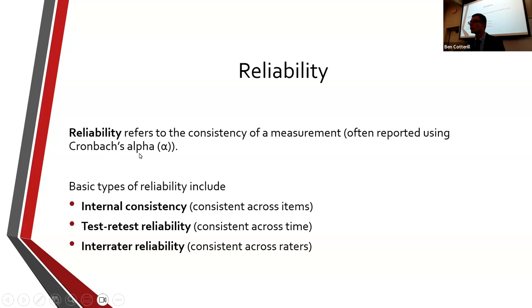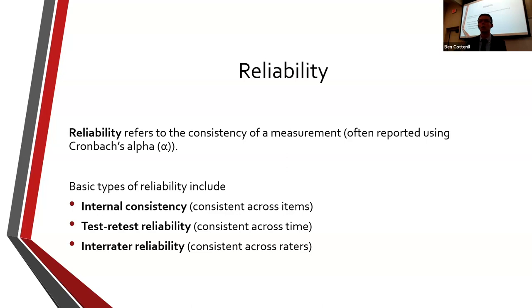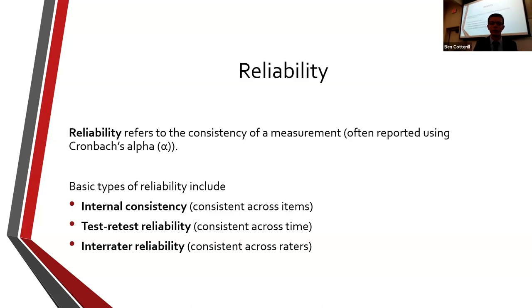Cronbach's alpha is the average correlation across items. If I have, say, eight questions measuring shyness, I want good correlation between all of them. It's going to be a number between negative one and plus one — the closer to zero, the weaker the relationship; the closer to plus one, the stronger the positive correlation. What I want here is a high positive correlation, telling me there's good consistency in how someone is answering all these questions. For internal consistency, we're looking for a correlation of about 0.8.